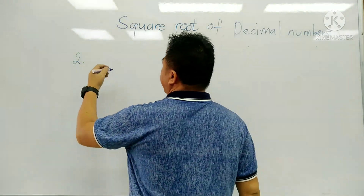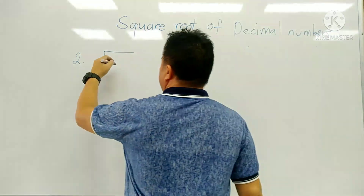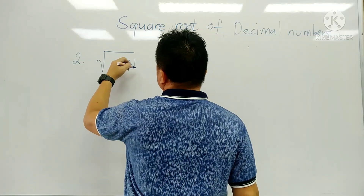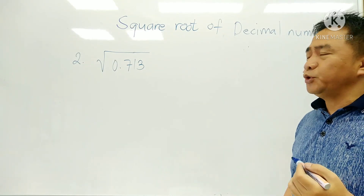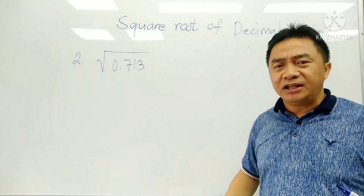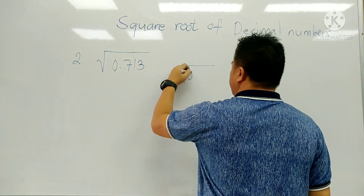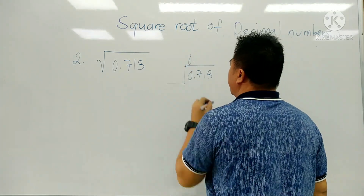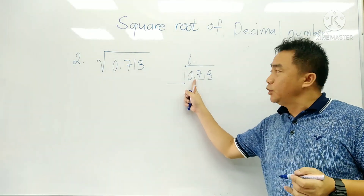Now we go to our second number. Let's say we have the square root of 0.713. What is the square root of 0.713? Now again, the same method will apply. So we divide: 7, 1, 3. We have here the decimal. And remember that from the decimal point, going to the left or to the right, we group by 2 pairs.